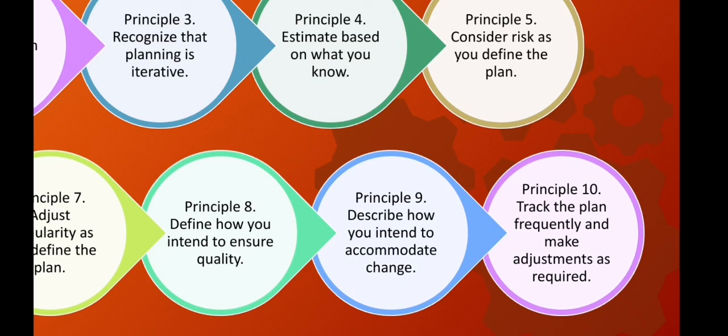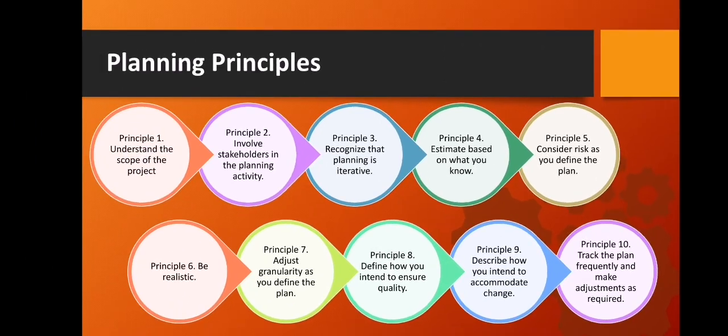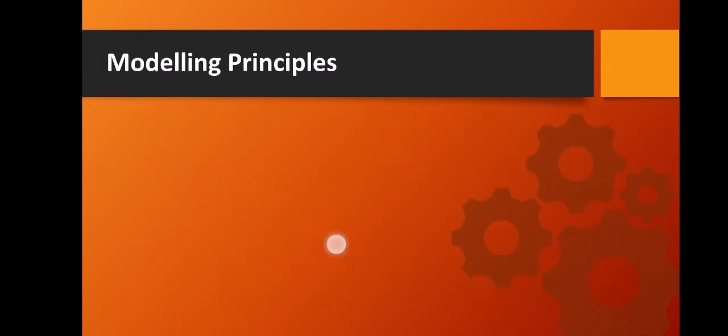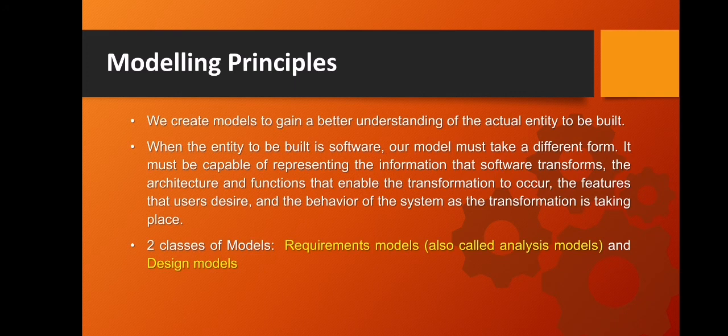Those are the ten planning principles. The next is the modeling principles. We create models to gain a better understanding of the actual entity to be built. When the entity to be built is software, our model must take a different form — it must be capable of representing the information that software transforms, the architecture and functions that enable the transformation to occur, the features that users desire, and the behavior of the system as the transformation is taking place.